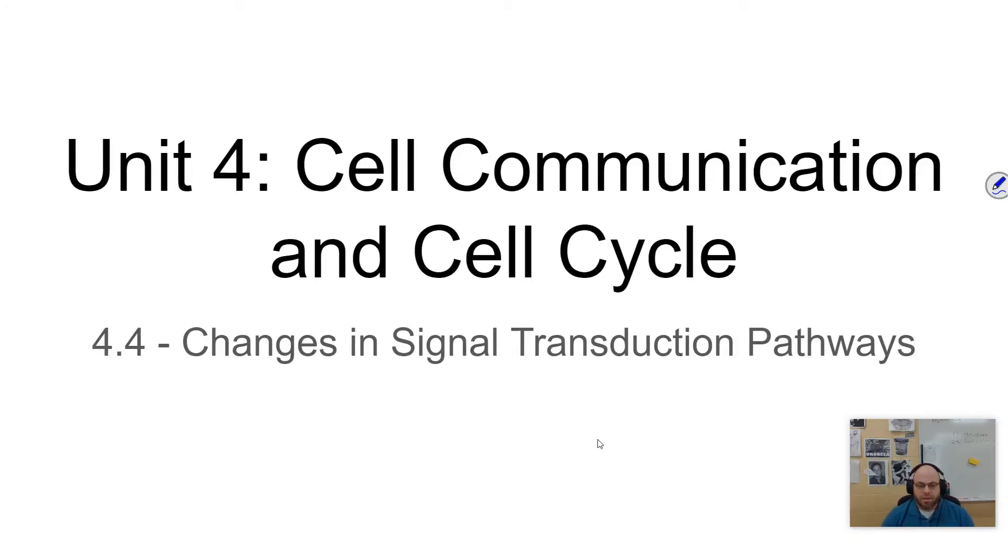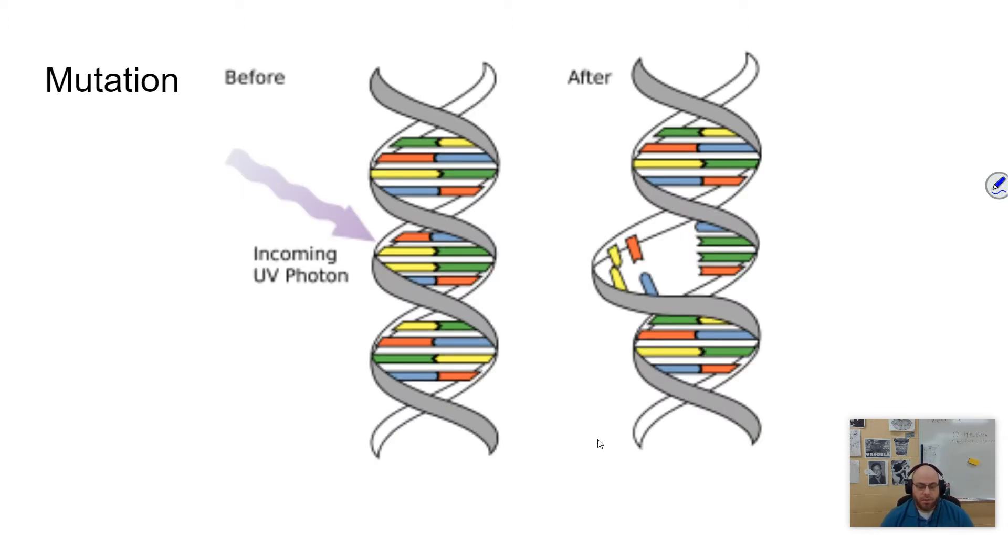In this video, we'll be looking at changes in signal transduction pathways, essentially changes that can happen in the pathway that can cause a different response or just no response. We're going to look at these in two categories. The first one can alter the cellular response with something called a mutation.